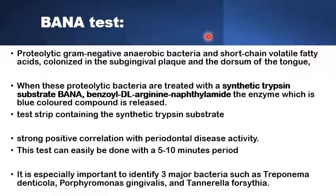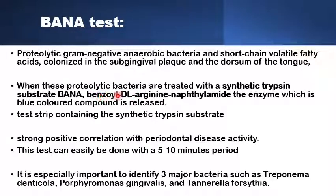The next group are specific halitosis tests designed to identify a certain cause for the halitosis. Starting with the BANA test, which is designed to identify proteolytic gram-negative anaerobic bacteria and short-chain fatty acids colonizing the periodontal pockets and the dorsum of the tongue. A test strip containing a trypsin substrate called BANA (benzoyl-DL-Arginine naphtylamide) turns blue if it comes in contact with plaque or pockets containing proteolytic gram-negative anaerobic bacteria. The test is very sensitive, takes only a few minutes, has a strong correlation with the presence of periodontal pockets and periodontitis, and can identify three major bacterial groups causing halitosis.